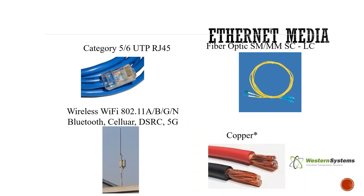Here are the layer one aspects. You have Cat 5, Cat 6, Cat 7 cables; fiber optic single-mode and multi-mode; and wireless technologies like Wi-Fi, Bluetooth, cellular, DSRC, or 5G. Copper is listed here to discuss it, but it is not actually defined by the Ethernet standards — although aside from the medium, copper uses the Ethernet frame format. So we'll talk about that as well.